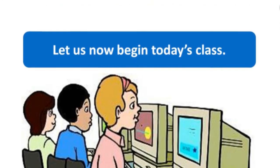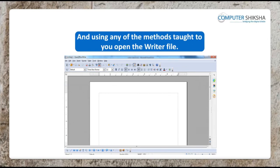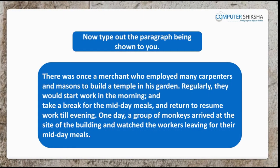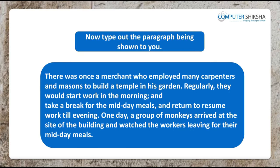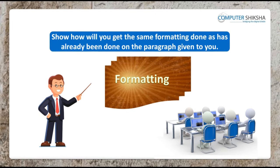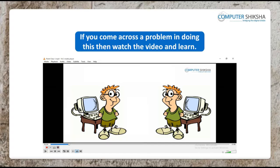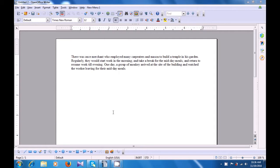Let's now begin today's class. Switch on your computers and then open your writer file. Now, type out the paragraph being shown to you. How will you get the same formatting done as has already been done on the paragraph given to you? If you come across a problem in doing this, then watch the video and learn. Let us watch this video and see how we can get the same formatting as was shown in the picture on the paragraph that you have typed.